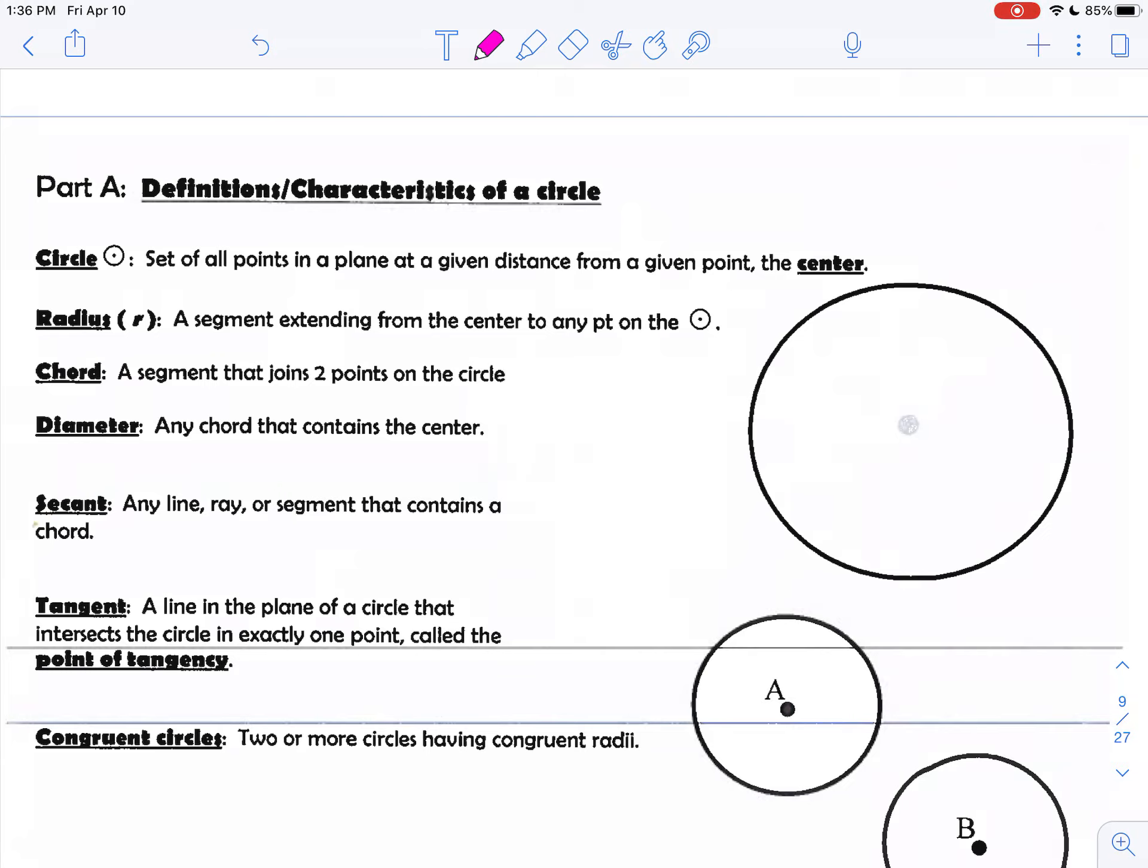A circle is a set of all points that has the same distance from the point that's the center, which I'll mark here, that is equivalent from the center to any point on the circle. If I pick any point on the circle, the distance between the center and that point is the same throughout the entire curve.